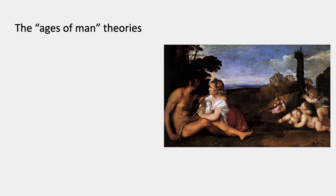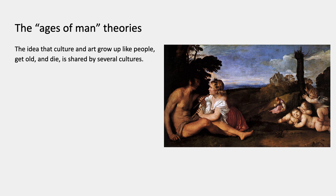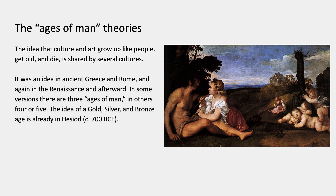These life cycle theories are often called ages of man theories — it's always gendered masculine. That's a Renaissance painting by Titian called The Three Ages of Man. On the right, babies; on the left, maturity; and in the background, old age, represented by a bald old man sitting in a field holding two skulls. The idea that culture and art grow up like people and get old and die is shared by a number of cultures — ancient Greece and Rome, and again in the Renaissance. In some versions there are three ages, in others four or five. There's a related idea that art passed through gold, silver, and bronze ages, first appearing in the ancient Greek poet Hesiod.